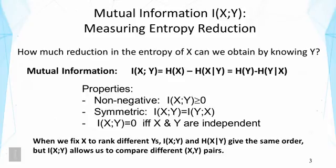It can also be defined as the reduction of entropy of Y because of knowing X. Normally the two conditional entropies, H of X given Y and H of Y given X, are not equal. But interestingly, the reduction of entropy by knowing one of them is actually equal. So this quantity is called mutual information denoted by I. This function has some interesting properties. First, it is non-negative. This is easy to understand because the original entropy is always not going to be lower than the conditional entropy.